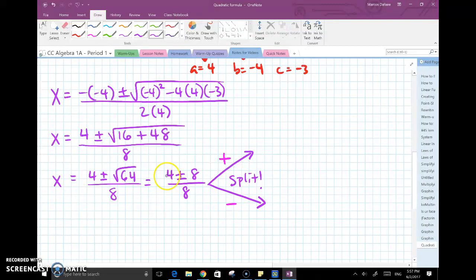So this needs to be undone by writing 4 plus 8 over 8, notice the negative is not there anymore, and then 4 minus 8 over 8, notice the plus is not there anymore. And then you simplify everything.